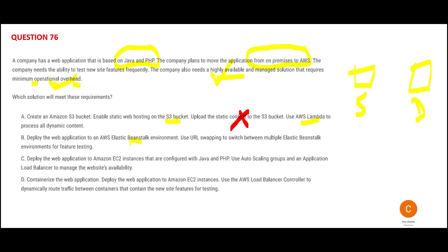So Beanstalk is highly available — that requirement is met. It also has minimum operational overhead because it is a managed service from AWS. The next part says it will swap the URL between multiple Beanstalk environments for feature testing. The question mentions testing new features frequently, so this addresses that requirement too. Everything is matching.